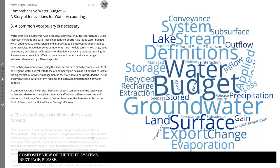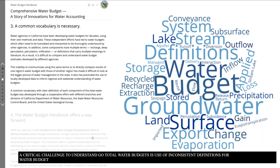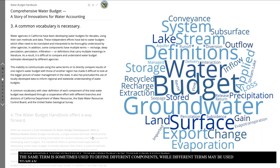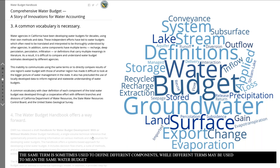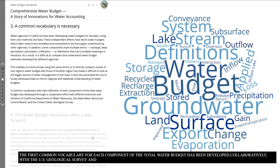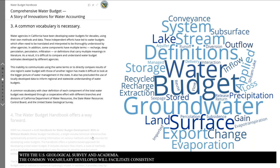A critical challenge to understanding total water budgets is the use of inconsistent definitions for water budget components by water agencies and water practitioners. The same term is sometimes used to define different components, while different terms may be used to mean the same water budget component. The first-ever common vocabulary for each component of the total water budget has been developed collaboratively, with vetting from multiple DWR programs, the State Water Resources Control Board, U.S. Geological Survey, and academia. This common vocabulary will facilitate consistent understanding and communication of water budgets among water practitioners.